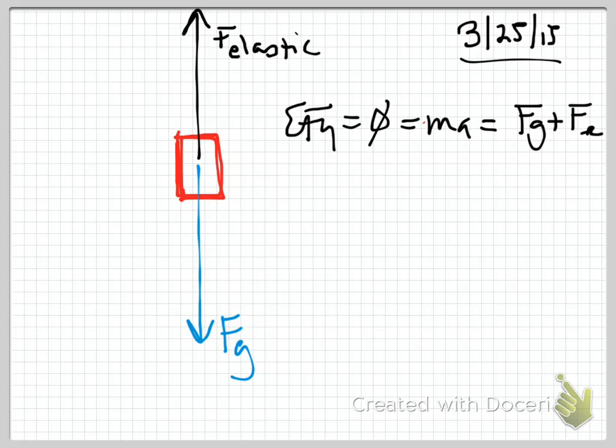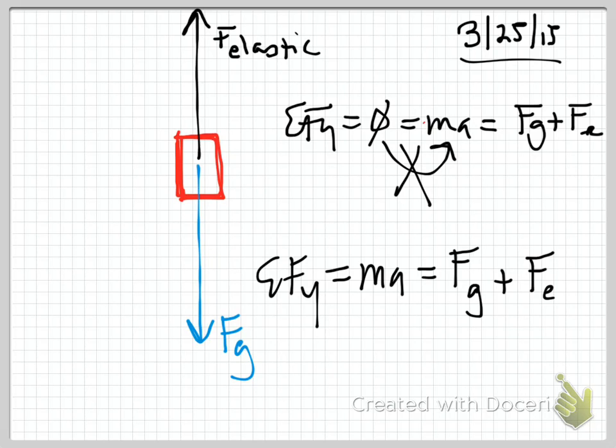Well, what if it's traveling downward, and then the bungee cord is pulling it back up? The idea behind bungee jumping. So if it starts to accelerate back up, this is no longer true. Now we have a sum of forces on the y equal to MA, and also equal to the force of gravity plus the elastic force. Does that make sense?